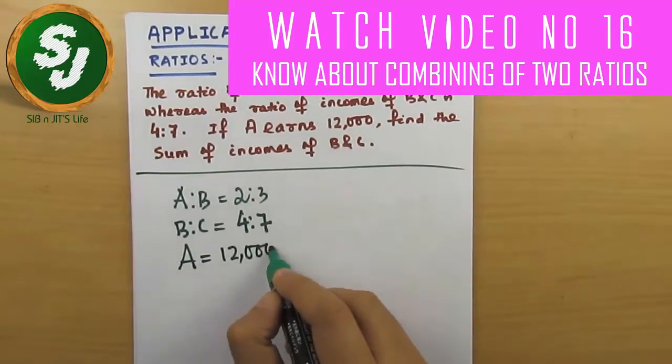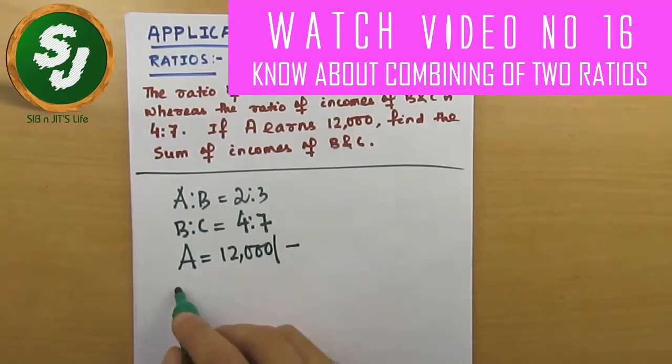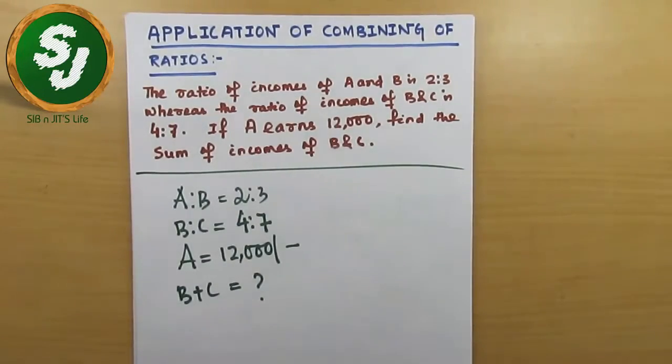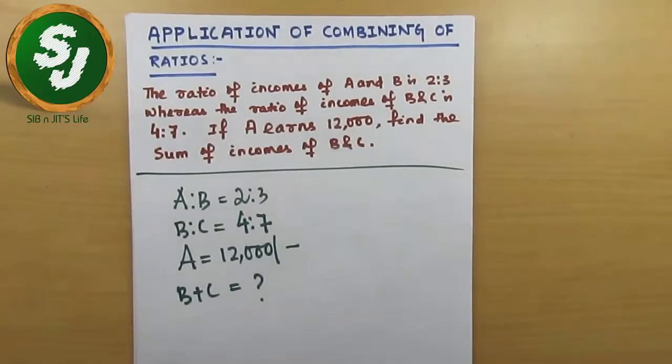And it says A earns 12,000, find the sum of incomes of B and C. So tell me the value of B and C. It's actually very simple. You can do these questions manually by using K concept and all whatever you learned in the last videos.